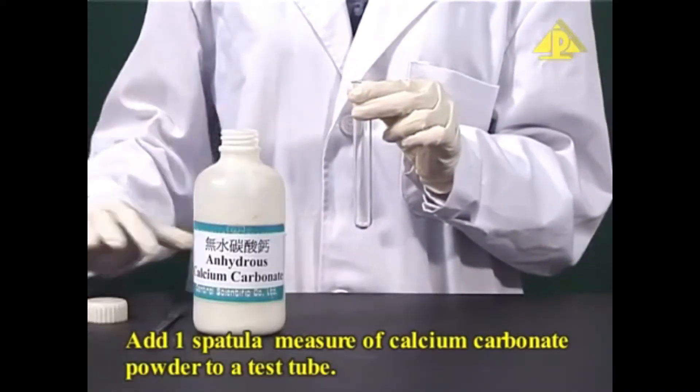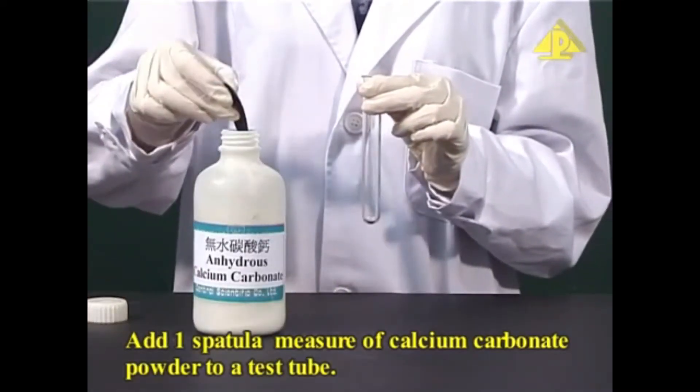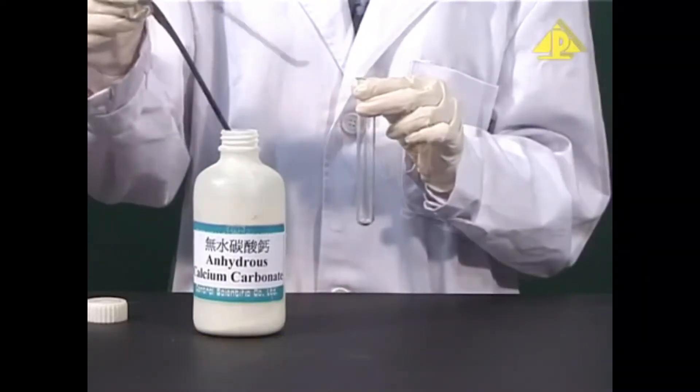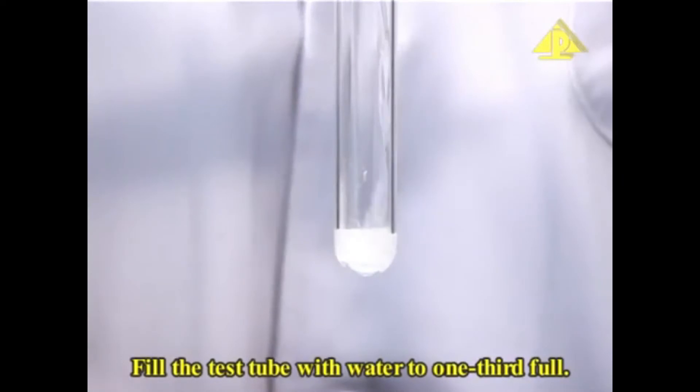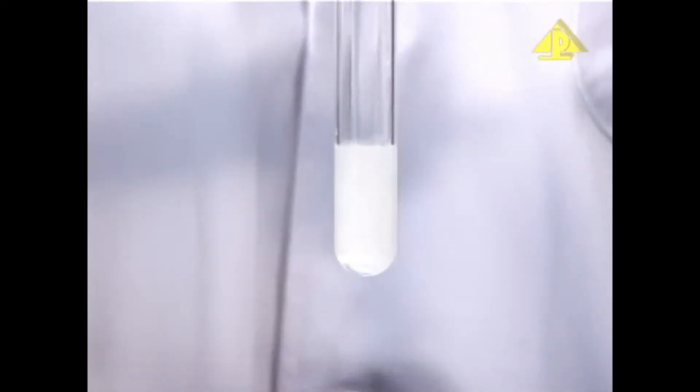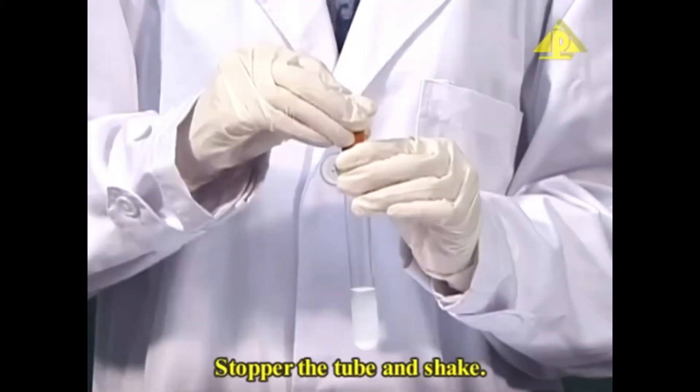Add one spatula measure of calcium carbonate powder to a test tube. Fill the test tube with water to one-third full. Stopper the tube and shake.